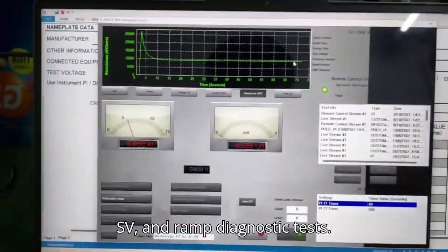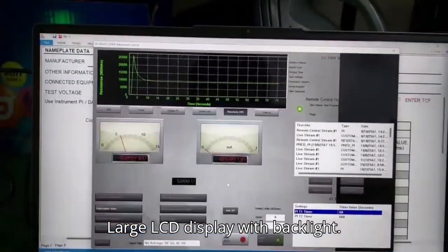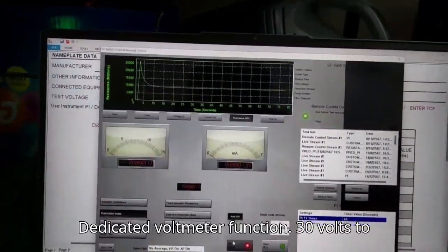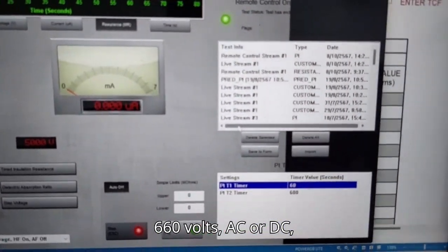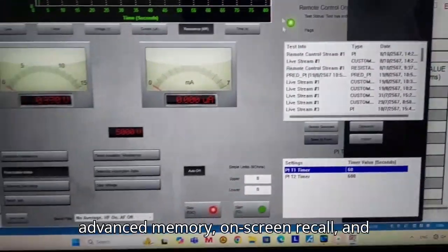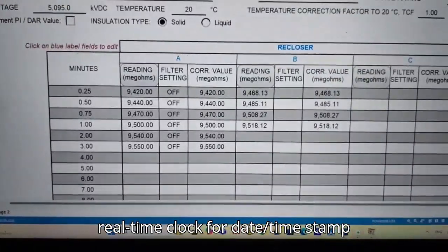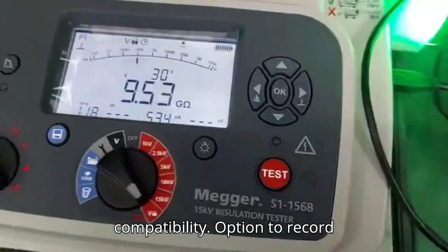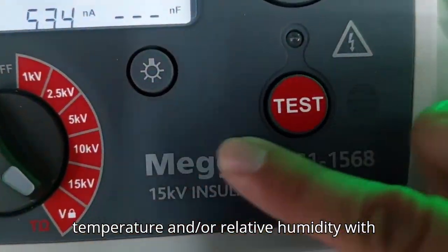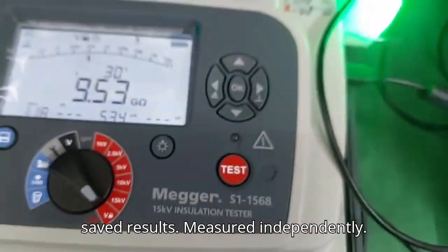And ramp diagnostic tests, large LCD display with backlight, dedicated volt meter function 30 volts to 660 volts AC or DC, advanced memory on screen recall in real-time, PowerDB date timestamp results, circuit asset management compatibility, option to record temperature and/or relative humidity and receive results measured independently.